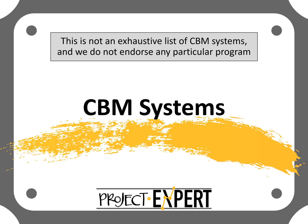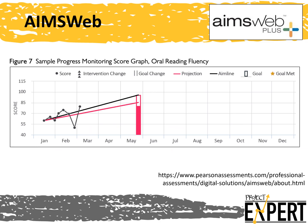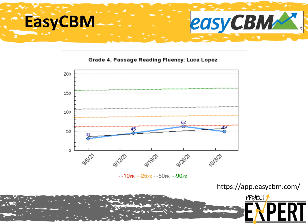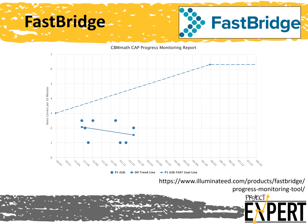Any of these systems are great for using CBM to progress monitor. Please note, this is not an exhaustive list of CBM systems, and we do not endorse any particular program. Amesweb's progress monitoring graph shows the student's data as well as a trend line, with various additional information available as noted by symbols at the top. Next is DIBELS, where you can see data over an entire school year, color-coded based on trends with respect to the goal line, with gray rectangles showing the benchmarks for each period. EasyCBM is another option, showing four progress monitoring points with horizontal color-coded lines representing percentile ranks for comparison. FastBridge also shows a goal line as well as a trend line for the data.